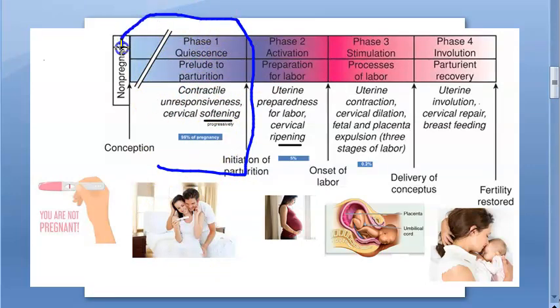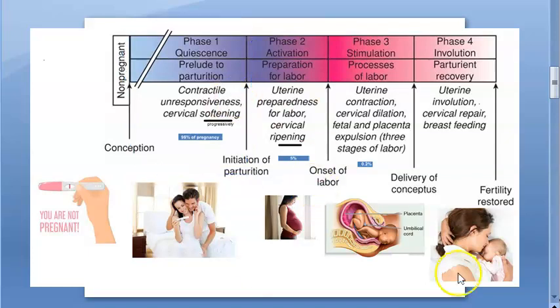Phase one of parturition is called the prelude to parturition. This is actually 95% of the pregnancy. Here there will be cervical softening.